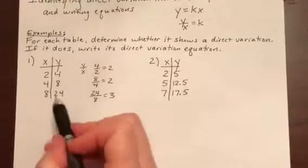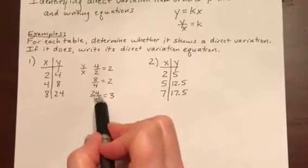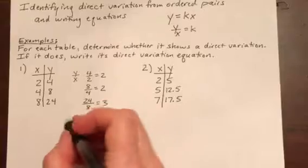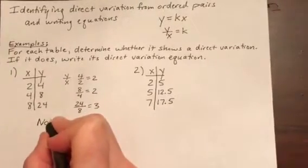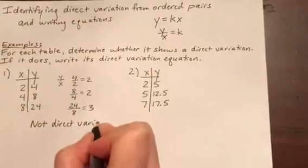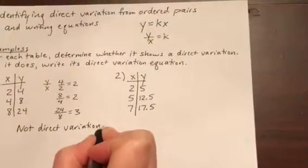So it looks like this third pair has a different ratio between the y and the x than the first two, and so this is not direct variation. Because all three of them would have to have the same ratio.